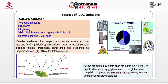Besides methane, other organic compounds are classified as non-methane volatile organic compounds (NMVOCs). They are emitted from terrestrial sources including forests, grasslands, shrublands, and croplands, with biogenic sources accounting for up to 99 percent of total emissions. Estimates report that plants emit VOCs at 1.1 to 1.5 PgC per year — where 1 Pg equals 1 billion metric tons — including isoprenes, monoterpenes, alkanes, esters, alcohols, and other aromatic hydrocarbons.